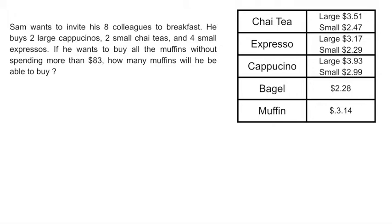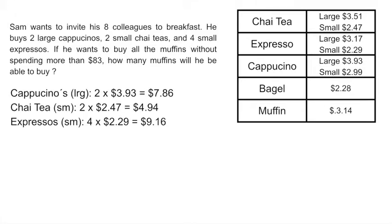The first step is to find out how much he spent on drinks. You look at your table and calculate how much he spent for each drink. He bought two large cappuccinos. The large cappuccinos cost $3.93 and he bought two of them, so you multiply that out and it gives you $7.86. Then you do the same thing for the two small chais and the four small expressos. In total he spent $21.96 on drinks.